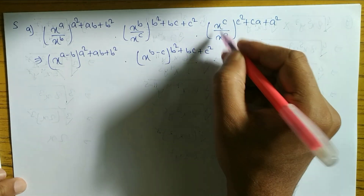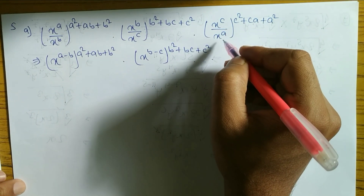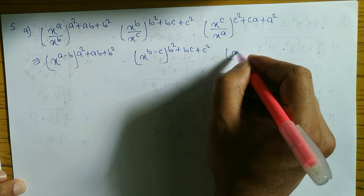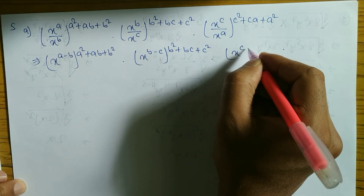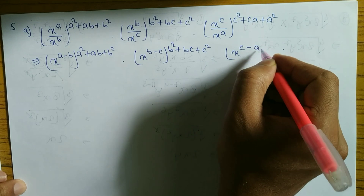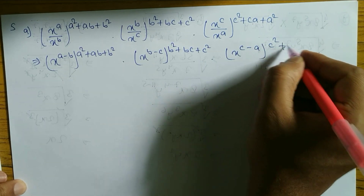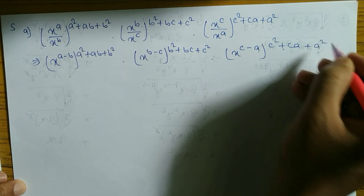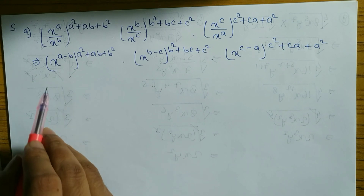Similarly here also — base same and in division subtract the power. So x to the power c minus a, we can write c squared plus ca plus a squared. Look at it properly here.